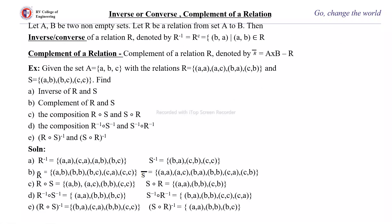Next is inverse or converse and complement of a relation. Let A and B be two non-empty sets and R a relation from A to B. The inverse or converse of R, denoted R⁻¹, is obtained by interchanging the ordered pairs in R. The complement of a relation is represented by R̄, where R̄ = A×B − R, meaning we exclude the elements of R from the full cross product A×B.